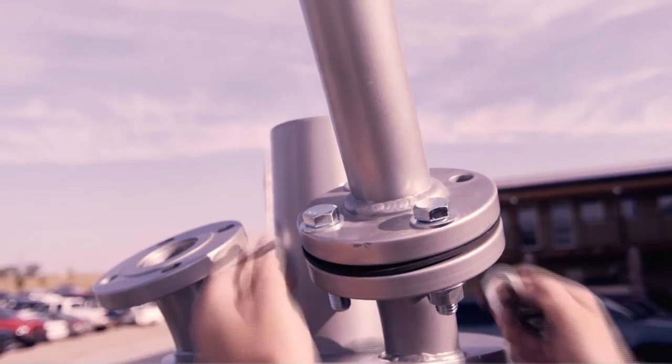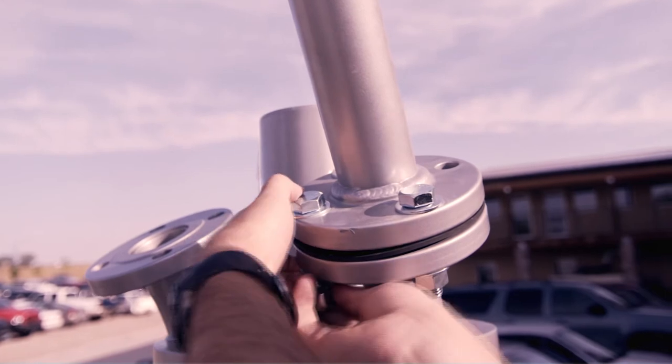Place four flange bolts through the flanges on the arm. Place the flange gasket onto the bolts.